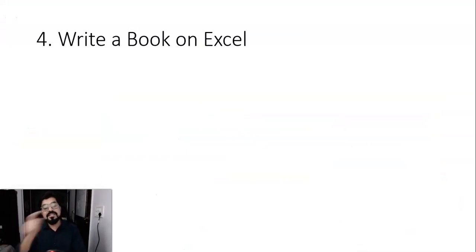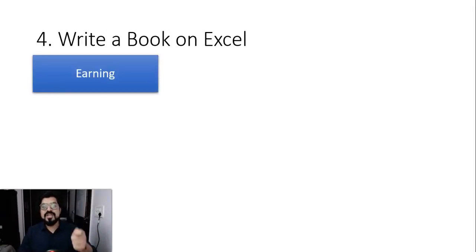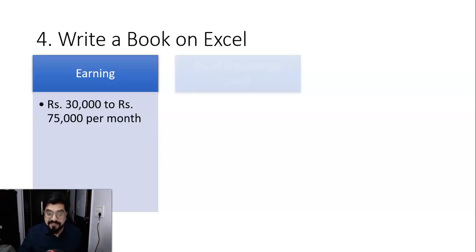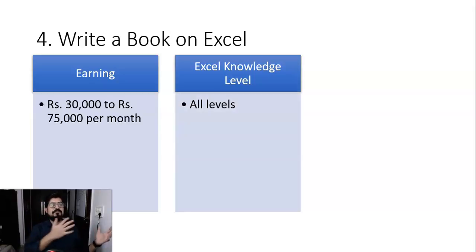I've written it one and a half year back and till now and for the rest of the lifetime, I will be getting the royalty on selling each one book. So how much you can actually expect the earning is between 30,000 to 70,000, 75,000 per month. And this is one time effort that you need to put in. And after that, it's going to be a passive source of income for you. And the knowledge of level, yes, you must be expert in Excel because you will be sharing basic till advanced level of knowledge. You can also write book on basic till intermediate, but it is recommended that you should be expert in Excel.